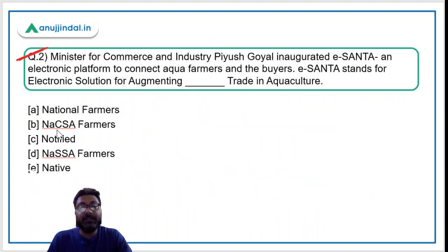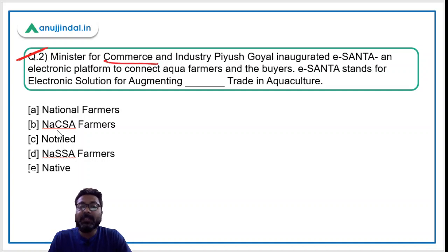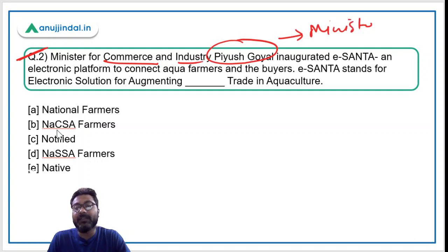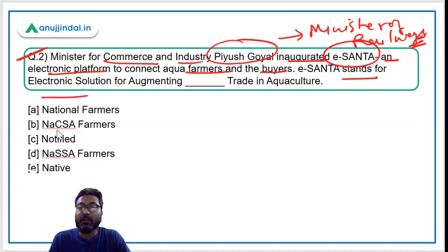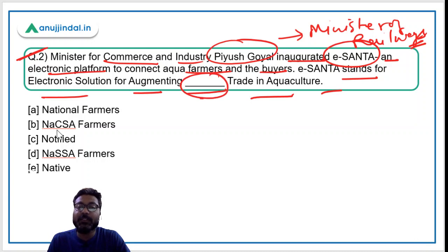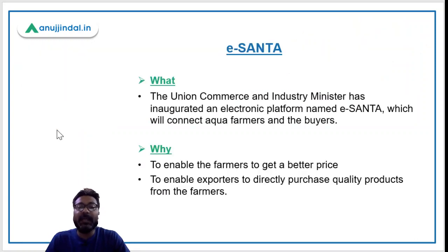Question number two is a very important question about an initiative, a portal, or electronic platform. The Minister for Commerce and Industry, Mr. Piyush Goyal, who is also the Minister of Railways, inaugurated e-SANTA — an electronic platform to connect aqua farmers and buyers. The question is: what is the full form of e-SANTA? It stands for Electronic Solutions for Augmenting NAKSA Farmers Trade in Aquaculture.